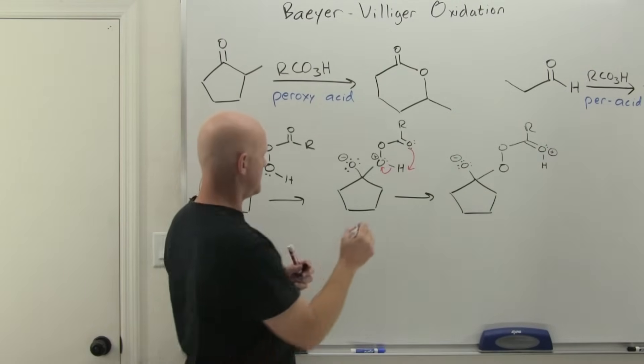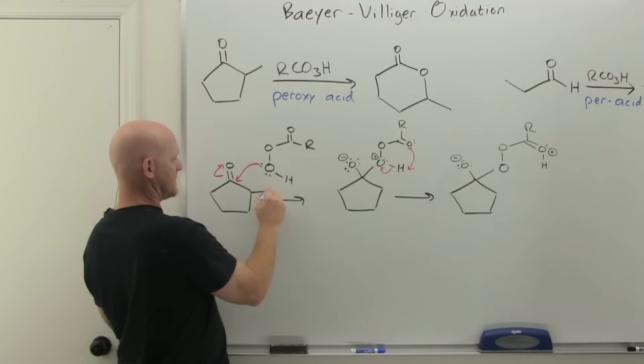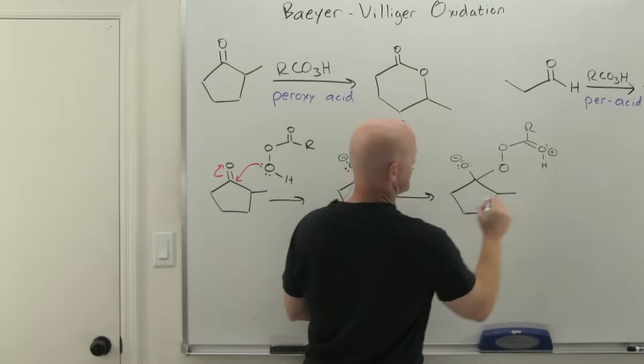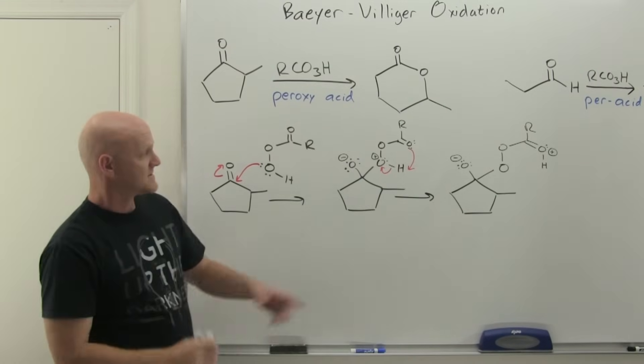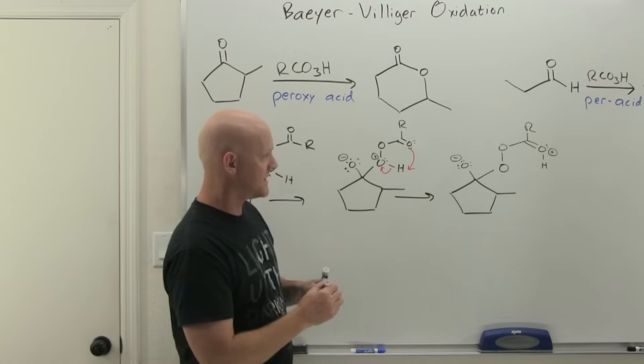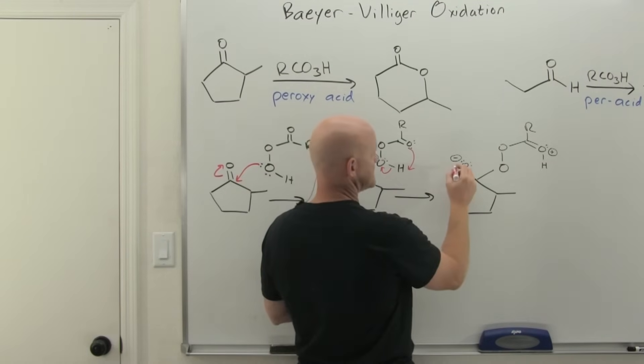That gets us to this intermediate. I lost my methyl group, but I want to make a point of doing the same reaction we were doing earlier, so let's add that methyl group back. Because this side is more substituted than the other side, that's where the oxygen will insert itself. What's going to happen is these electrons will come back down.